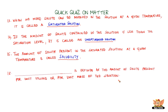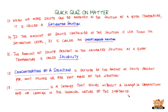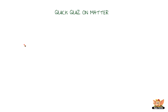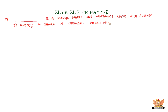Concentration of a solution is defined as the amount of solute present per unit volume or per unit mass of the solution. A physical change is a change that occurs without a change in composition and no change in the chemical nature of the substance. A chemical change is a change where one substance reacts with another to undergo a change in chemical composition.